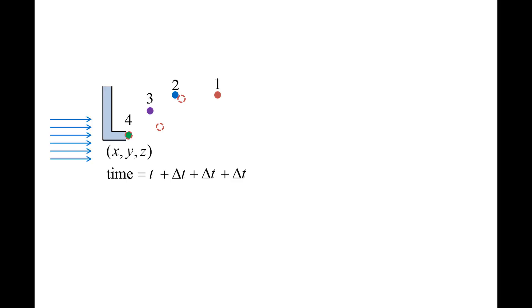The dye markers 1, 2, 3, and 4 together make up a streak line, which is defined as a set of fluid elements that pass through a fixed point in space. All 4 dye markers originated at position xyz.